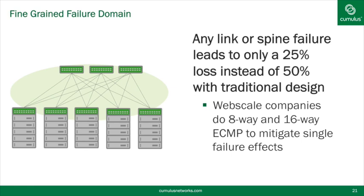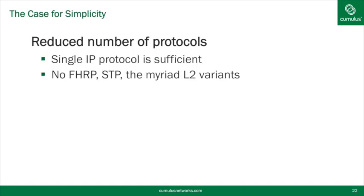There is also a strong case for simplicity. In this network you can reduce everything to just a single IP routing protocol. You don't need FHRP, HSRP, VRRP, GLBP, or any first-hop redundancy protocol. You don't need STP and its myriad variants. You can run with OSPF or BGP — standard protocols. The fabric itself is fairly simple and allows applications to communicate very effectively without creating hotspots. And when something goes wrong, dealing with one or two protocols instead of fifteen makes troubleshooting much easier.